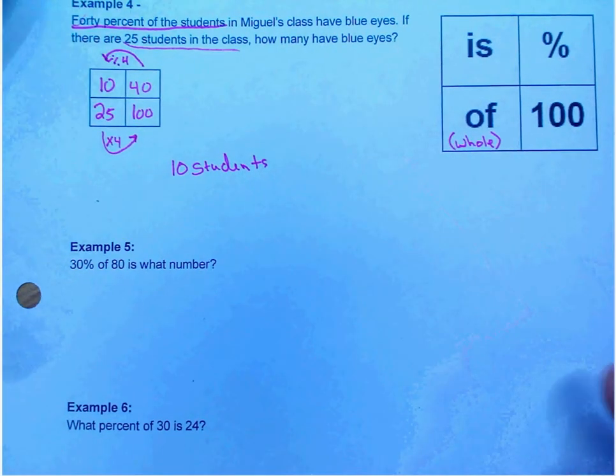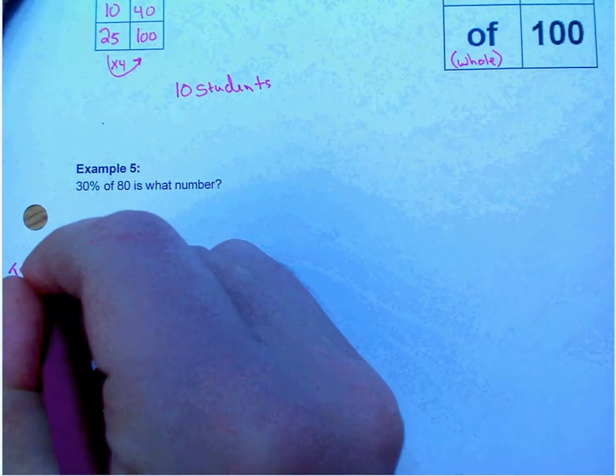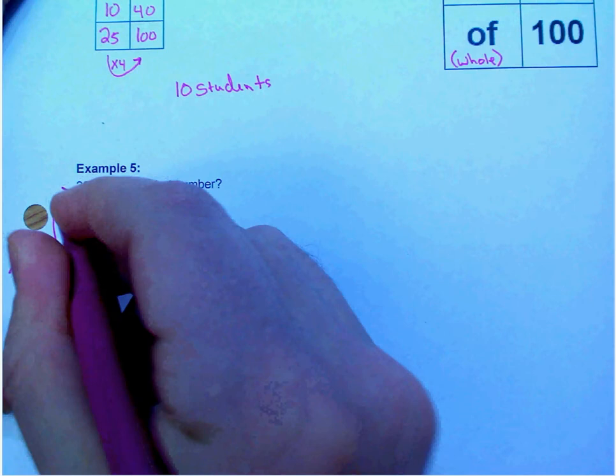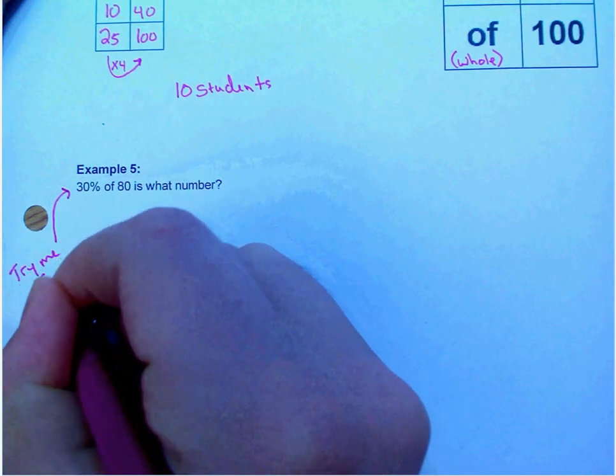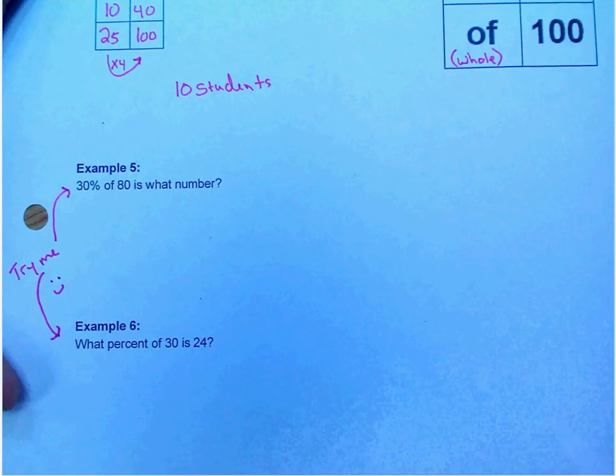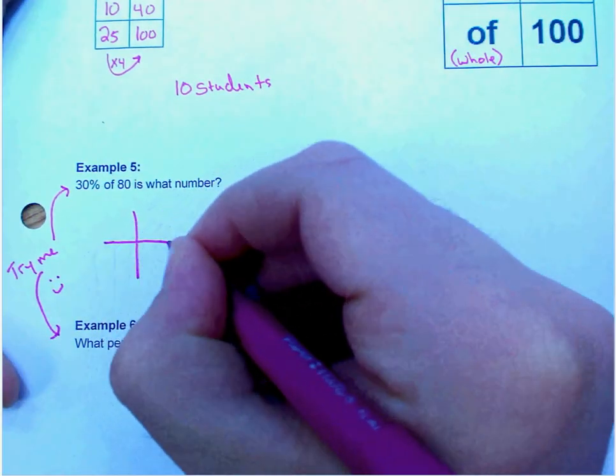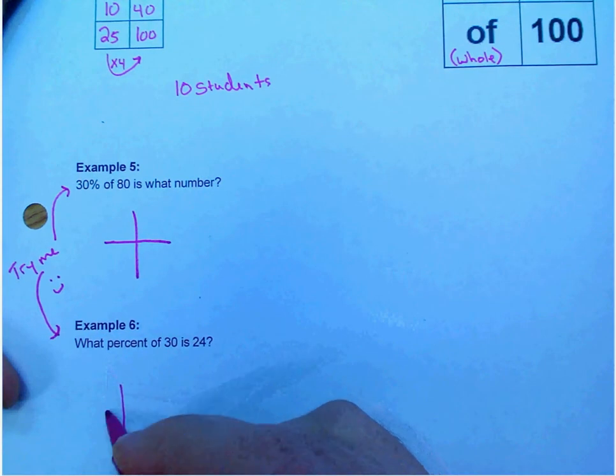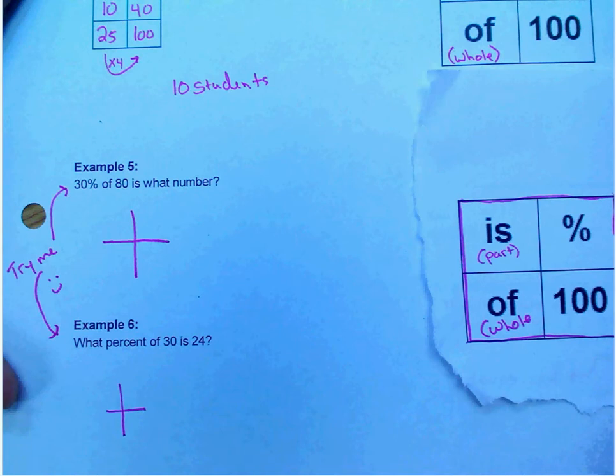I want you to try example five and six on your own. Pause the video now and give it a go. Before you do that, you should also draw your box. Is of percent 100. Is of percent 100.